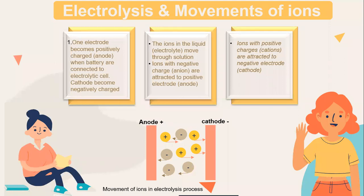Electrolysis and movement of ions: when batteries are connected to an electrolytic cell, one electrode becomes positively charged and the other negatively charged. The cathode becomes negatively charged. The ions in the liquid electrolyte move through the solution — ions with negative charge are attracted to the positive electrode (anode), and ions with positive charge are attracted to the negative electrode (cathode). This diagram essentially shows the movement of ions in the electrolysis process.